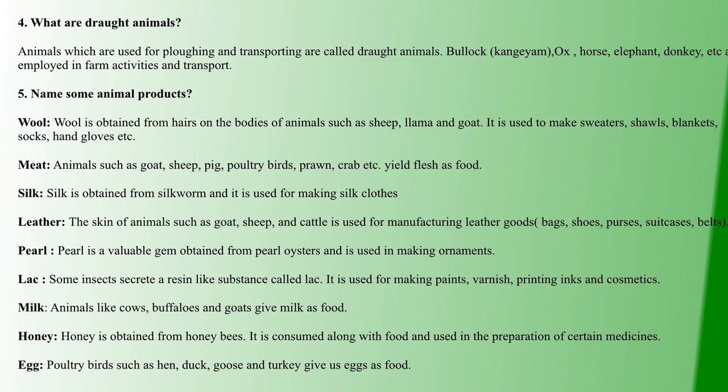Next products are milk — from cows, goats, and buffaloes; honey — from honeybees, used as food and in medicines; and eggs — from hen, duck, and goose. These are the various animal products that humans derive and produce.